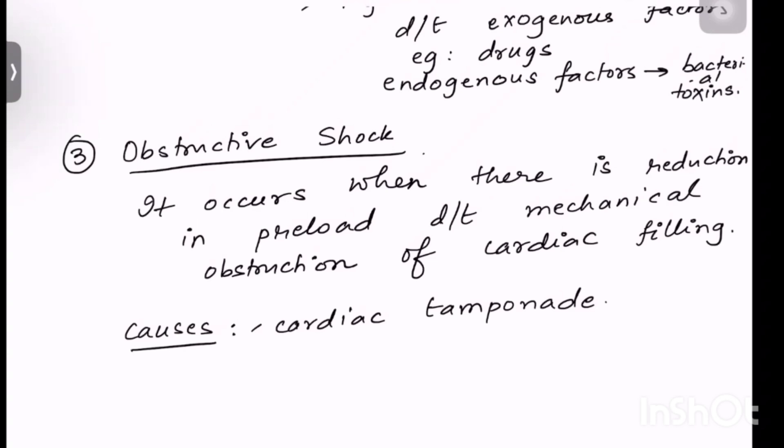The other causes of obstructive shock can be pneumothorax, specifically tension pneumothorax. Because in pneumothorax the heart is getting the opportunity to expand and fill with blood, but in tension pneumothorax it is a one-way mechanism. So once the air comes it can't go out, and the heart is unable to expand further so it will not receive blood. Other causes include massive pulmonary embolus and IVC obstruction.